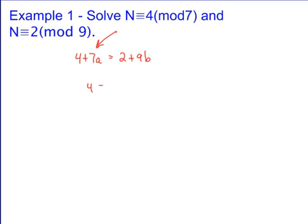And so that's going to give you 4 is equivalent to, well, mod 7, that's going to give you 2 plus 2b mod 7. And so that means you're going to get 2b equals 2 mod 7. Now, you need to remember how to solve this equation or this congruence.